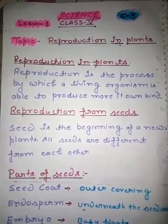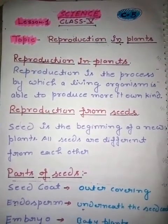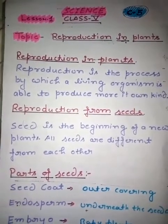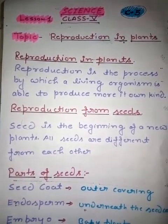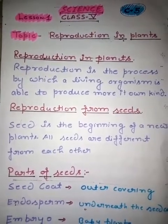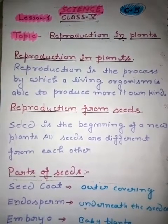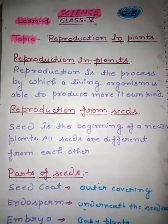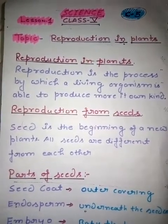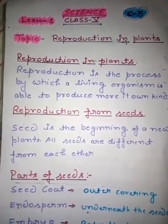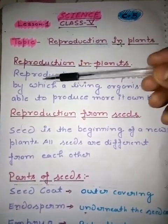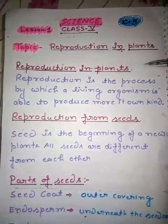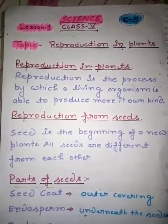Seed is the part of the plant that helps in reproduction. Seed ek aisa part hota hai jo ki plants ka reproduce karne mein help karta hai — that is called reproduction. So guys, let's learn more about reproduction. Reproduction is the process by which a living organism is able to produce more of its own kind.